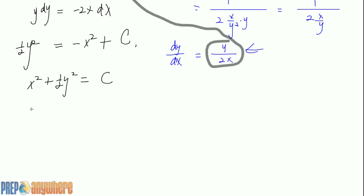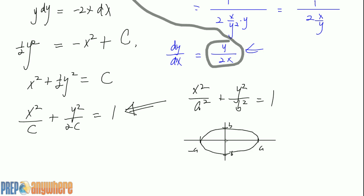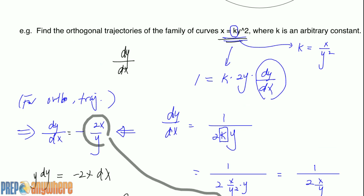If you've done conic sections, you should know what that is. This is an equation of an ellipse. Ellipse looks like this, with the major axis being a, minus a, b, minus b. Now what kind of curve is the original? It's a parabola, but instead of y being isolated, x is isolated. That means it's a parabola going left and right, like this.